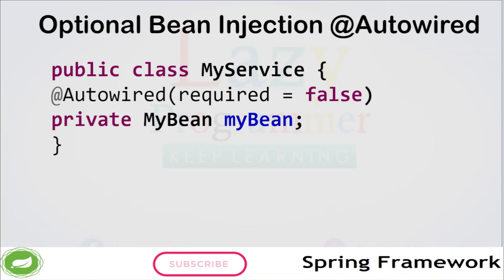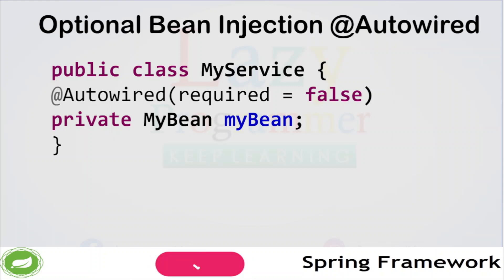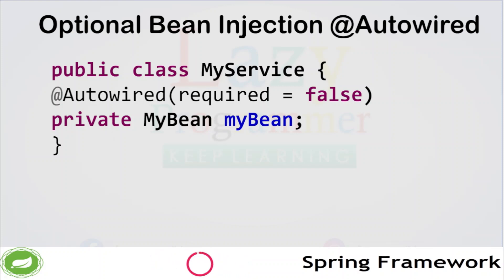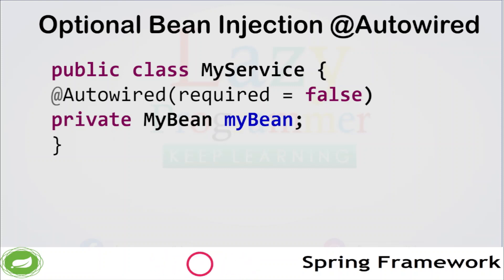We can also configure this annotation based on our requirements. The @Autowired annotation can be used with optional dependencies. If you tag a dependency with @Autowired and the Spring IOC container does not find it in the context, it will throw an error during application startup. But if the Bean is marked as optional using @Autowired(required = false), the Spring IOC container will not throw an exception if it is unable to find the matching Bean. By default, required is true. In this example, the myBean object will be injected if it is available, but no exception will be thrown if it is not available in the context.